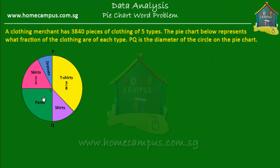Now, what can we tell about this slice of the pie over here — the green one that represents the pants? Looking at this slice and this right angle over here, we can tell that this is a quarter of the whole pie chart. So the pants are one-fourth of all the pieces of clothing.